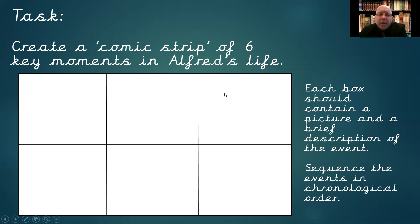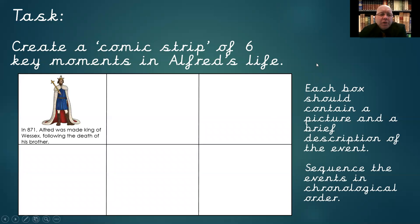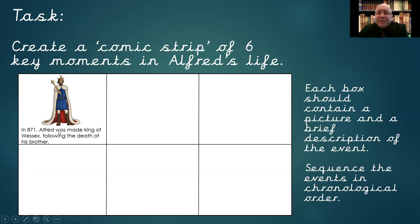Whichever six you choose, sequence them in chronological order — as they would have happened in Alfred's life. So there's my example for the first one: I thought I might as well start at the beginning when he gets crowned. So in 871, Alfred was made king of Wessex following the death of his brother — just a short caption to explain what was going on, and then an illustration, a picture to go with it. And you might choose to add a speech bubble to this.